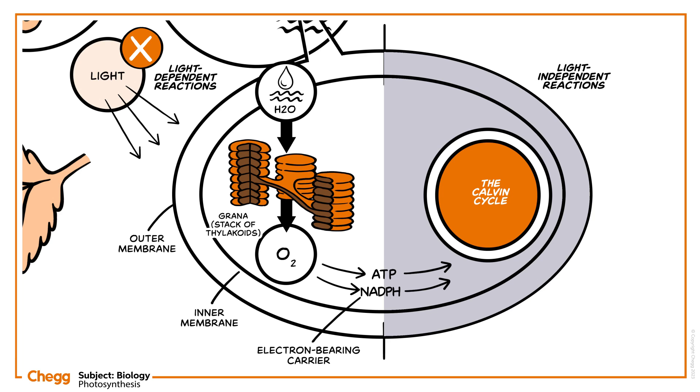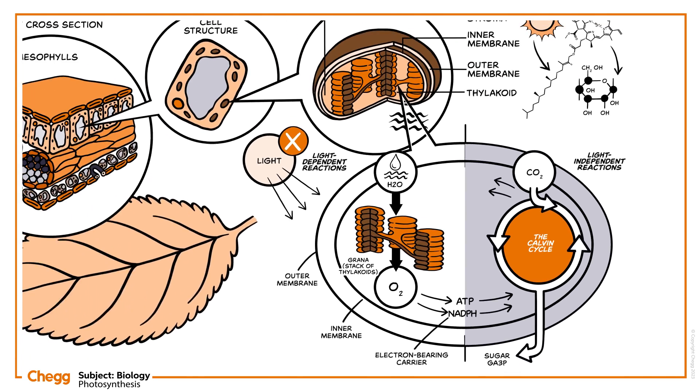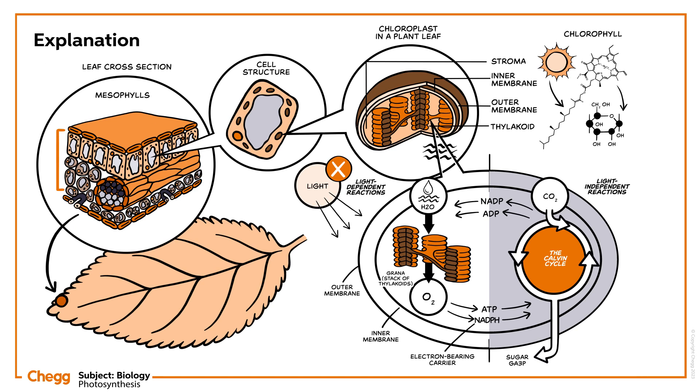Light, when absorbed, is stored as ATP and NADPH, which function as fuel for further reactions. The Calvin cycle uses the molecules from light-dependent reactions and fixes carbon dioxide to produce 3-carbon sugar glyceraldehyde-3-phosphate (G3P) molecules, which then form glucose.